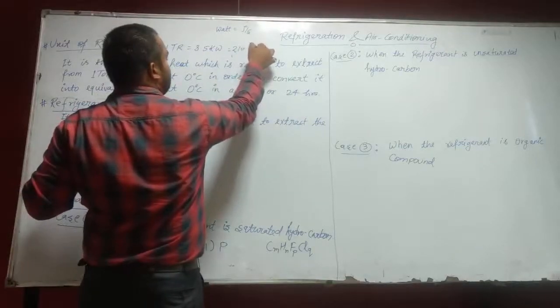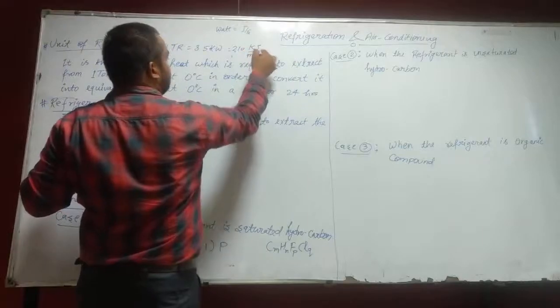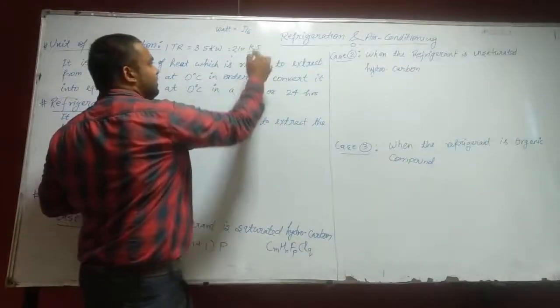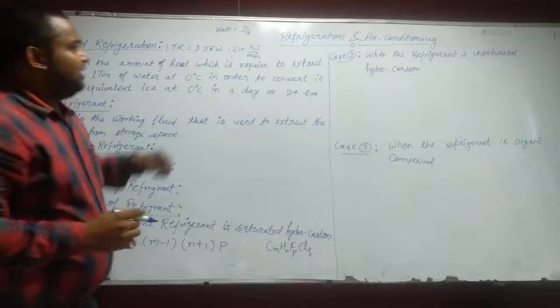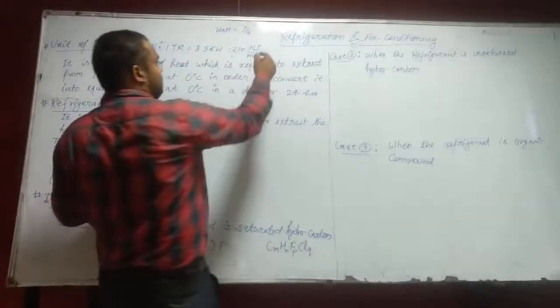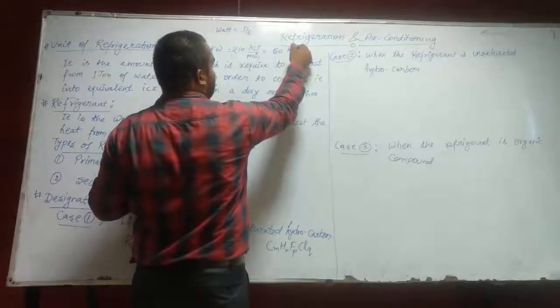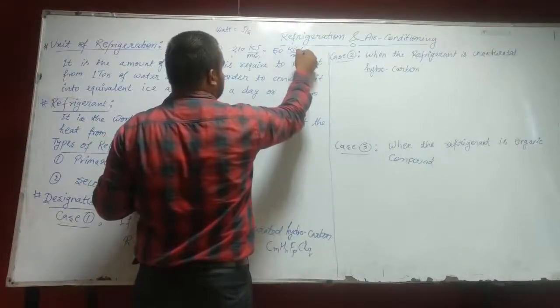If we want to convert it into calories, then divide by 4.2. It will become 50 kilocalories per minute.